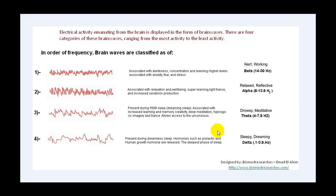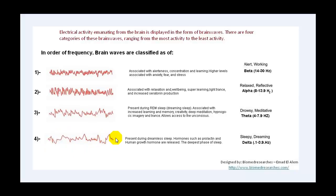The fourth type is called the delta brain wave, ranging from 1 to 3.9 hertz. It can be seen during sleep and dreaming, and is present during dreamless sleep — the deepest phase of sleep. Delta waves have the highest amplitude and the lowest frequency.